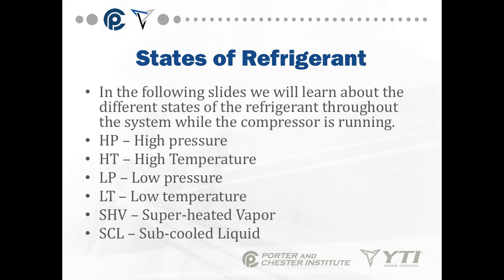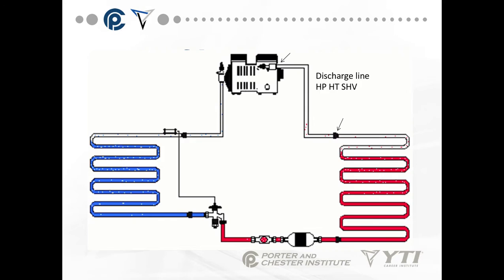We're going to talk about some states of refrigerant. The initials you'll see on the following slides are: HP for high pressure, HT for high temperature, LP for low pressure, LT for low temperature, SHV for superheated vapor, and SCL for sub-cooled liquid.